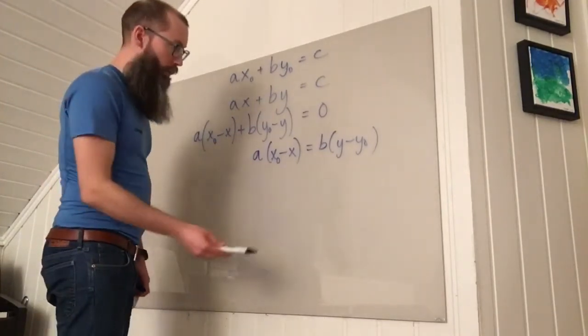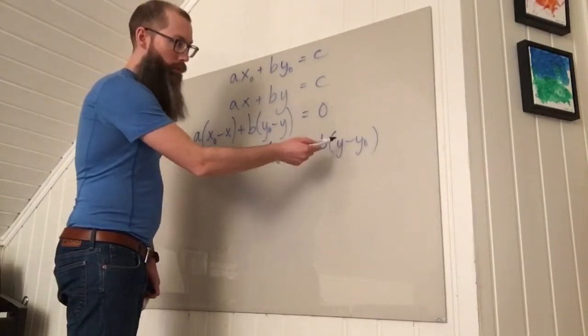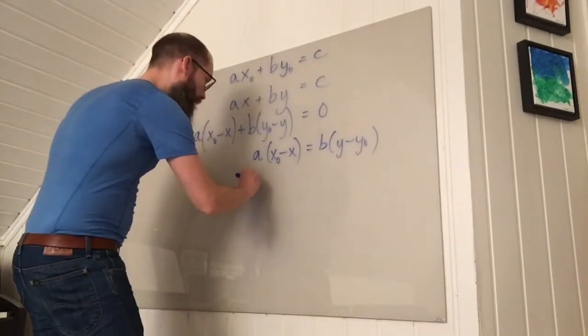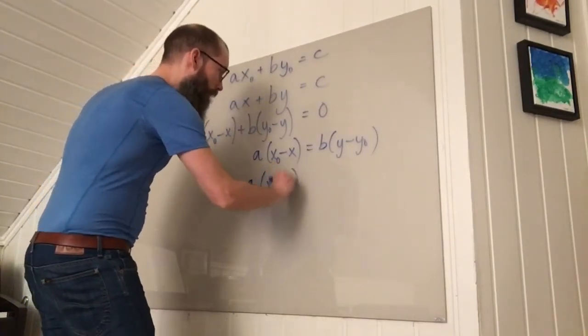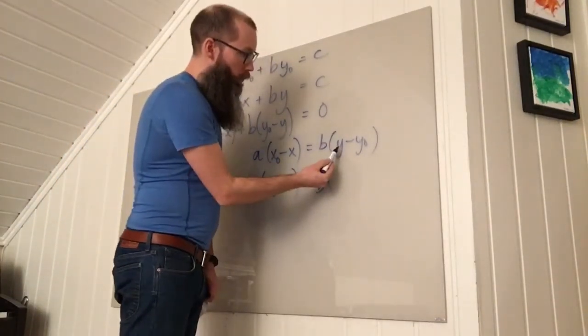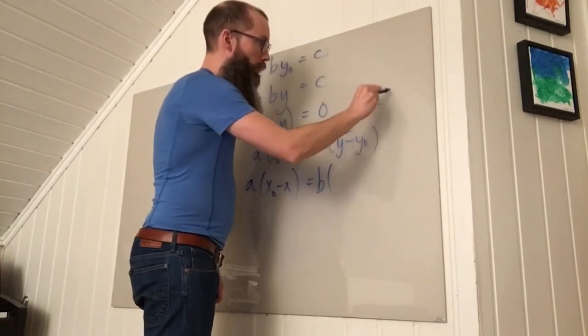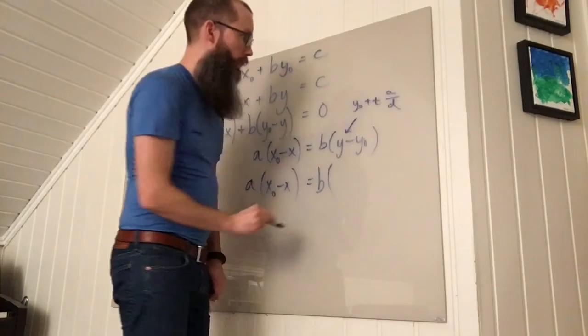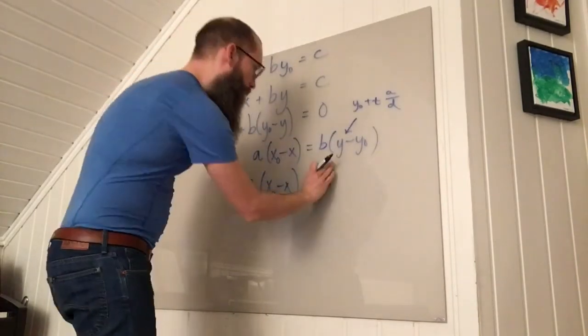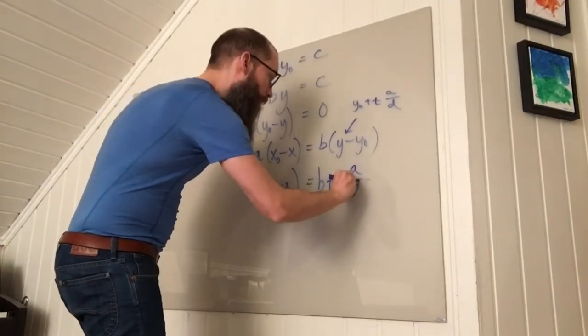So using the expression I found for Y, I can replace Y by Y0 plus T times A divided by D. And that gives me A times (X0 minus X) equals B times this. And then I have this Y replaced by Y0 plus T A divided by D. And that means that Y0 is going to cancel. So I'm left with B times T times A divided by D.